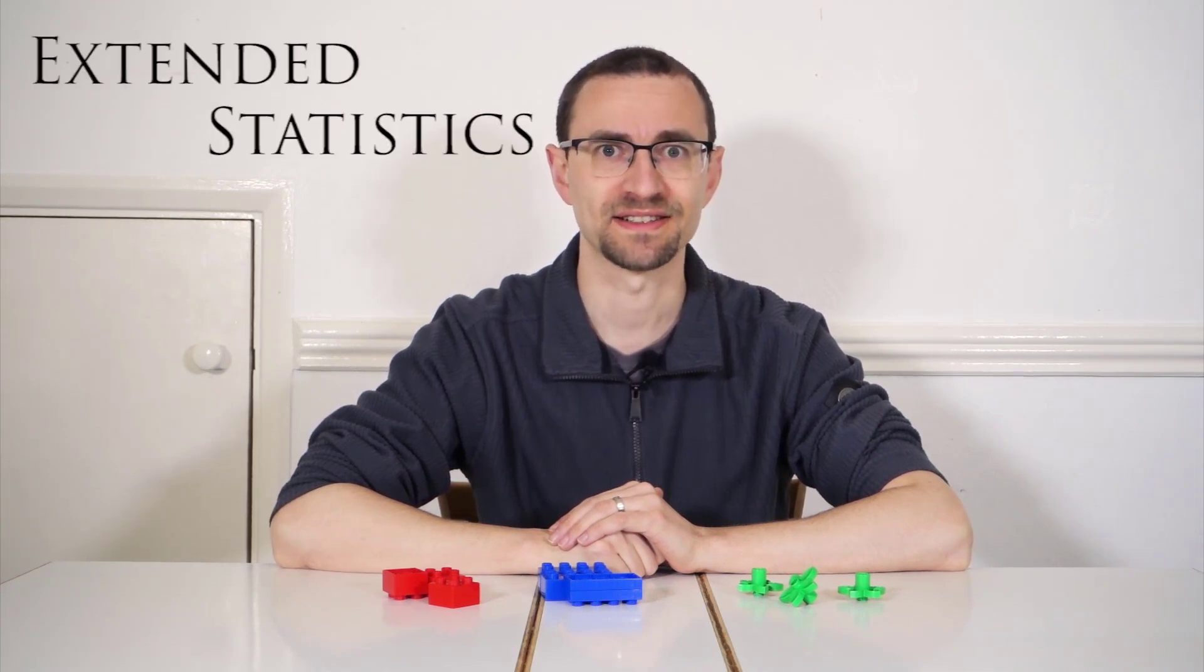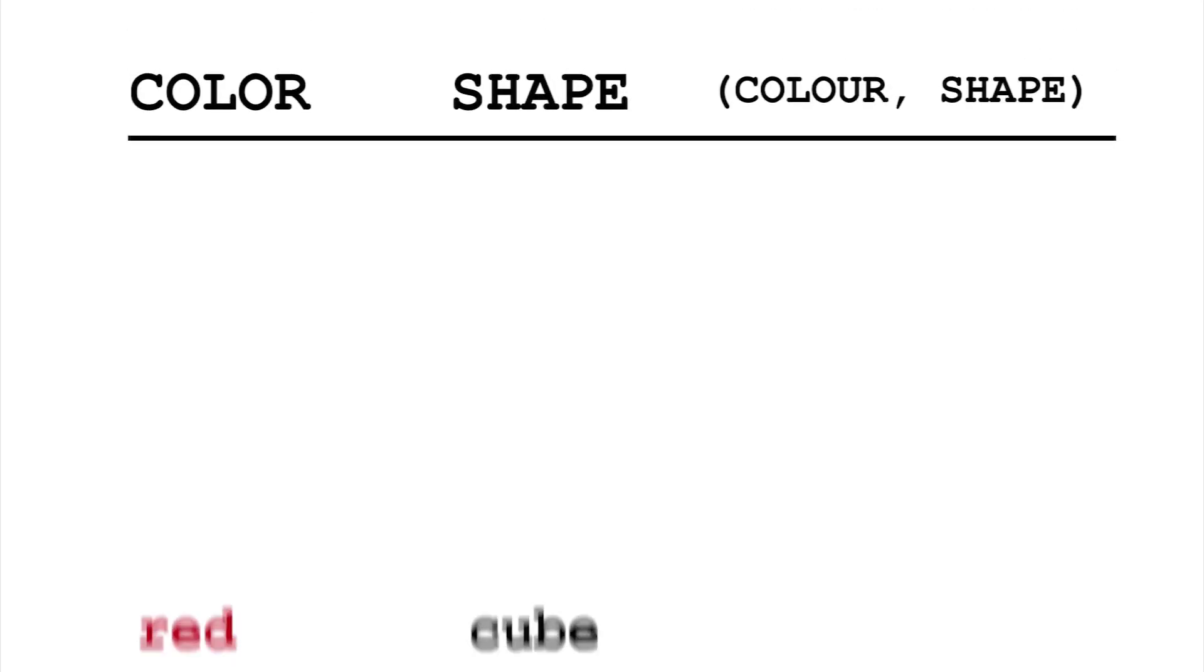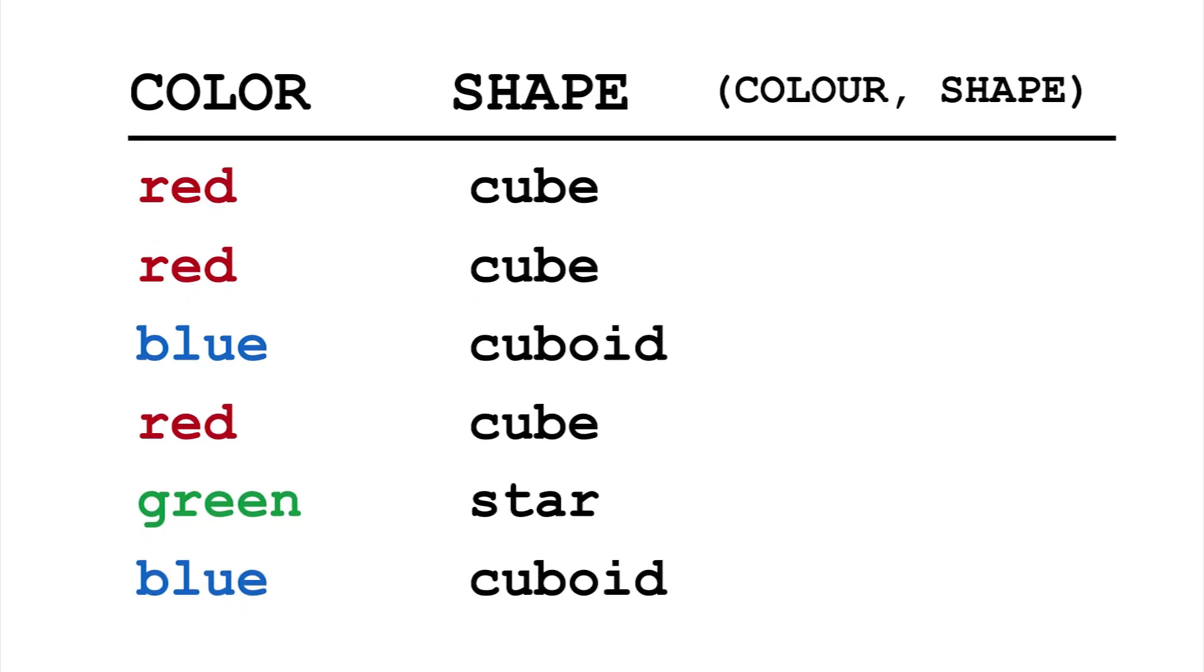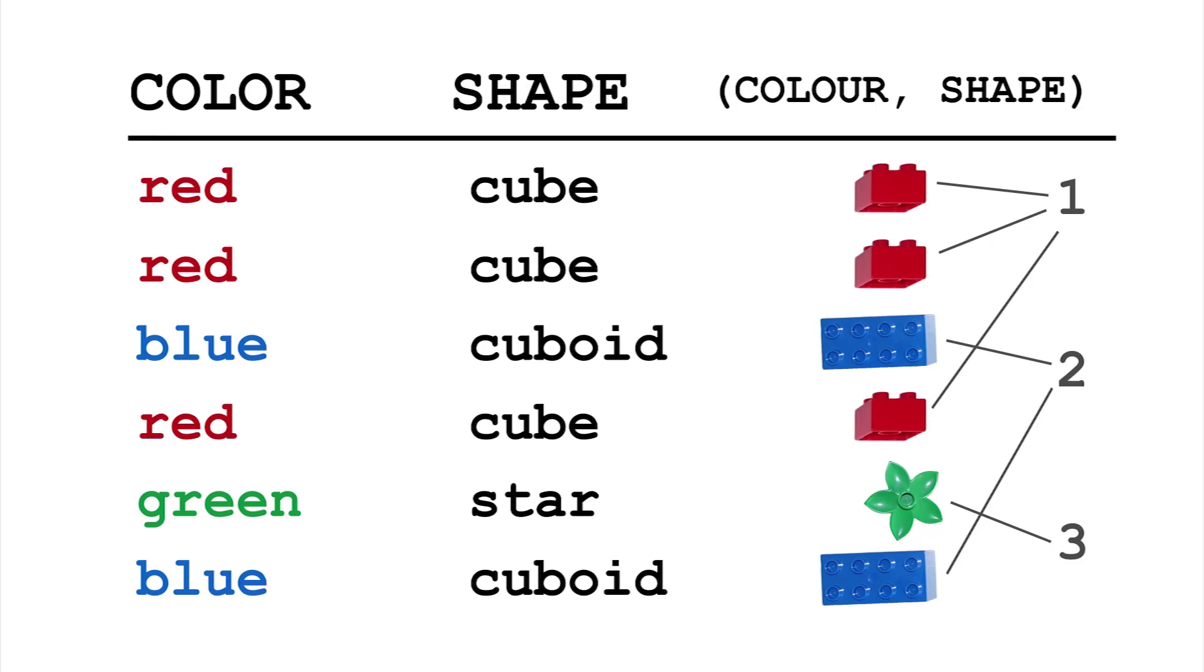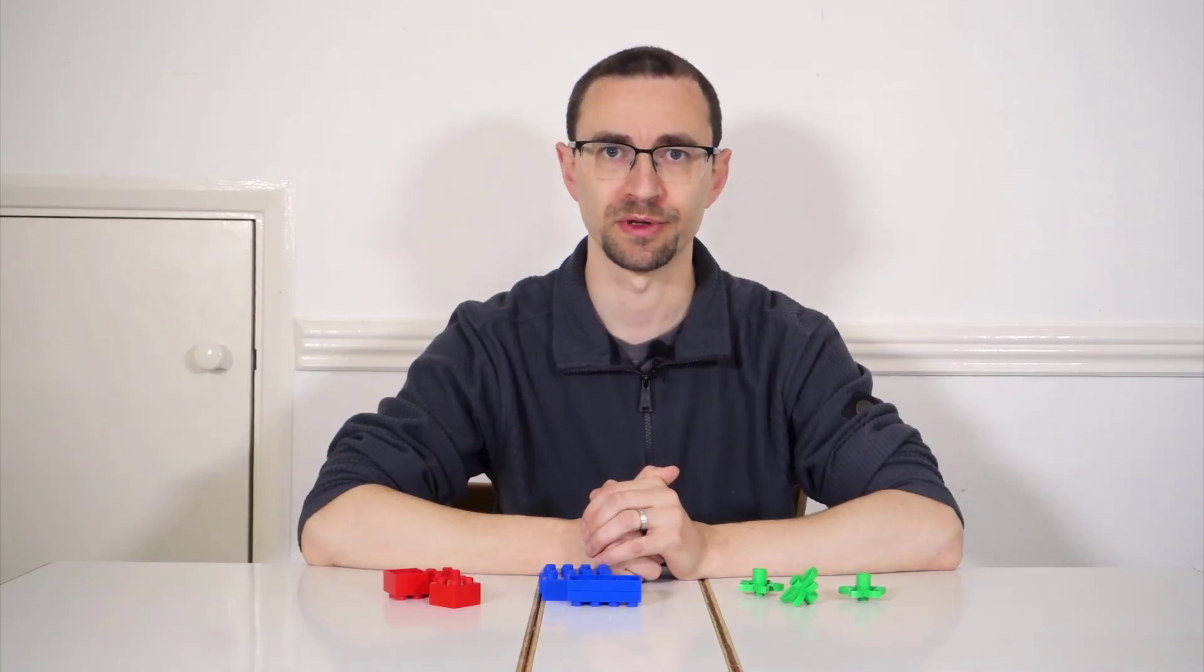So what can we do about this? Create extended statistics. These capture relationships between columns. By considering a group of columns as one, the database can record how many different values there are across the columns. So with extended stats on color and shape, we can now see that there are only three different combinations, and the optimizer can guess correctly again. Okay, so that solves the correlation problem.